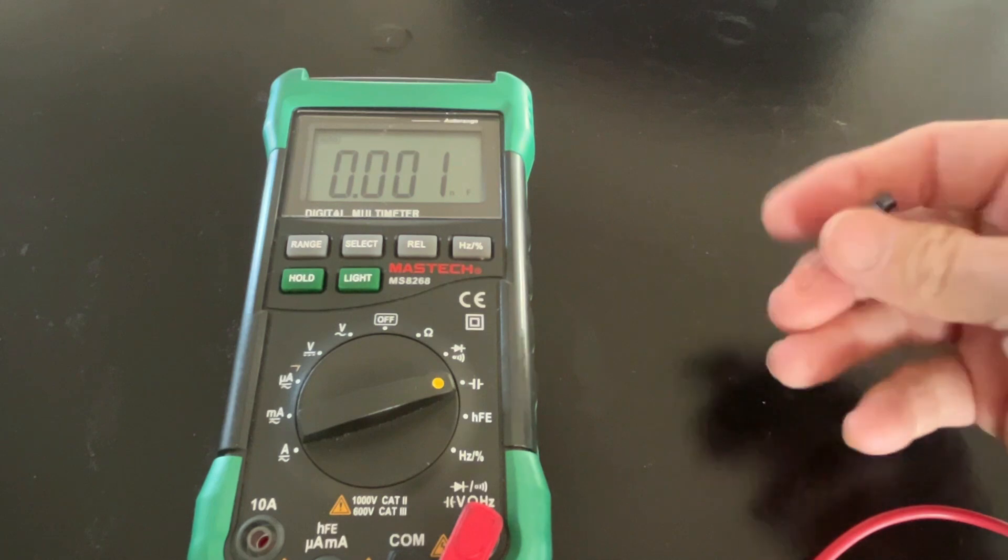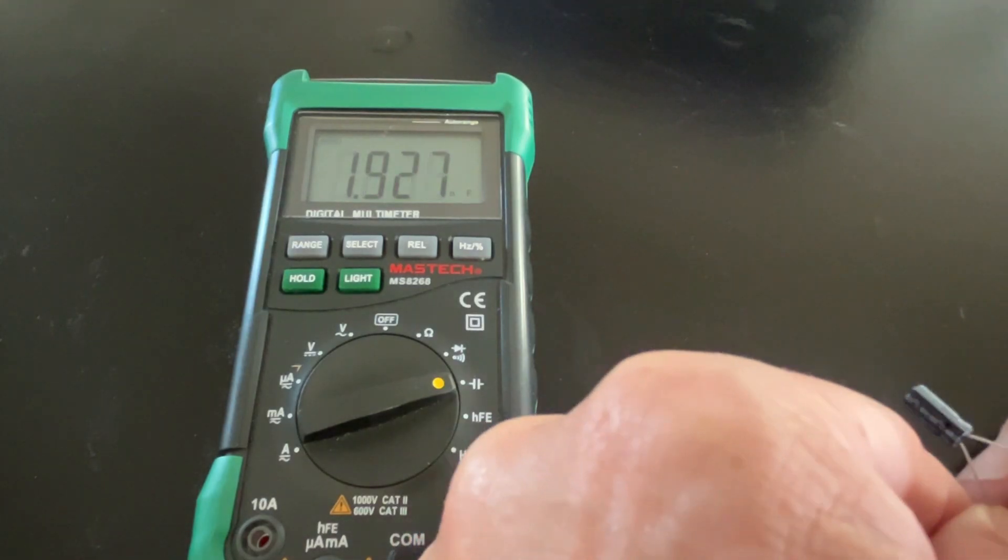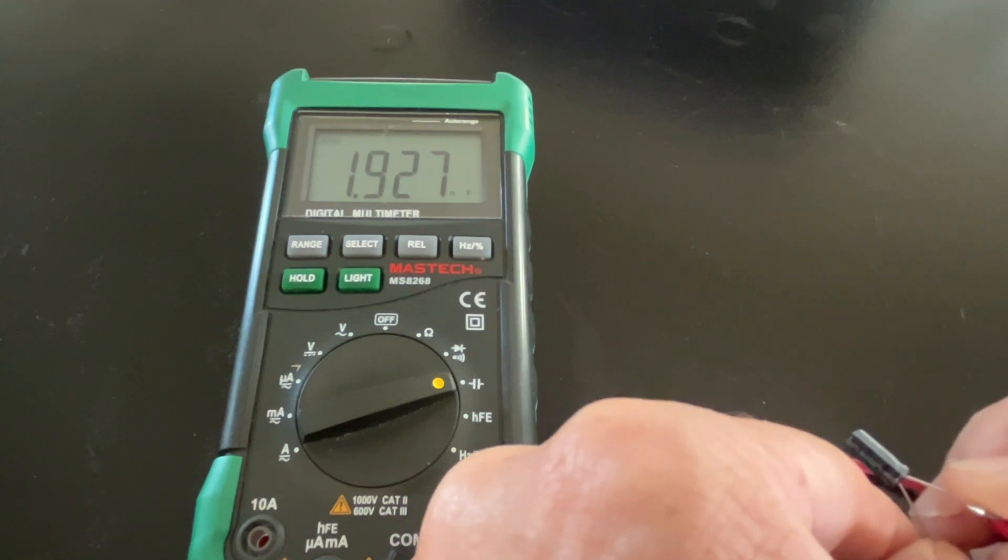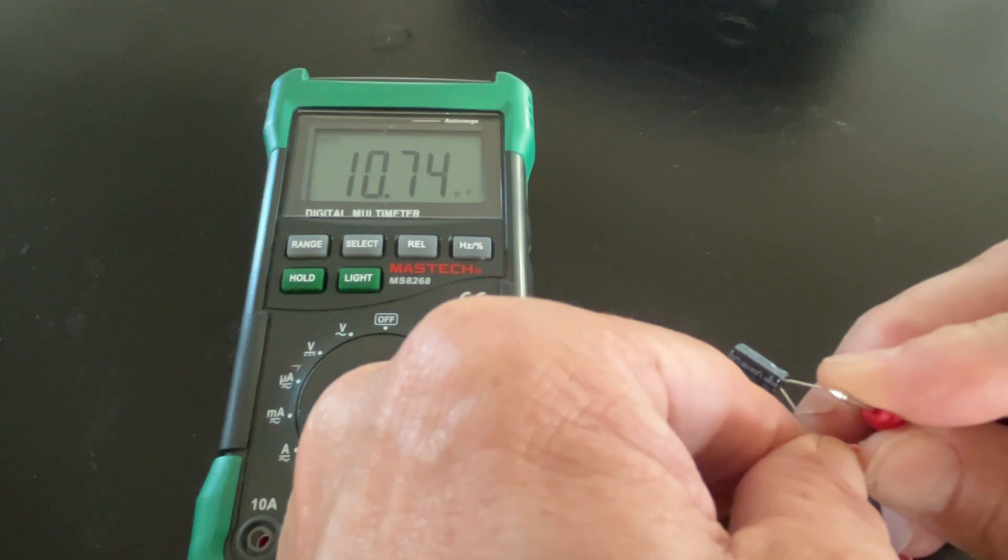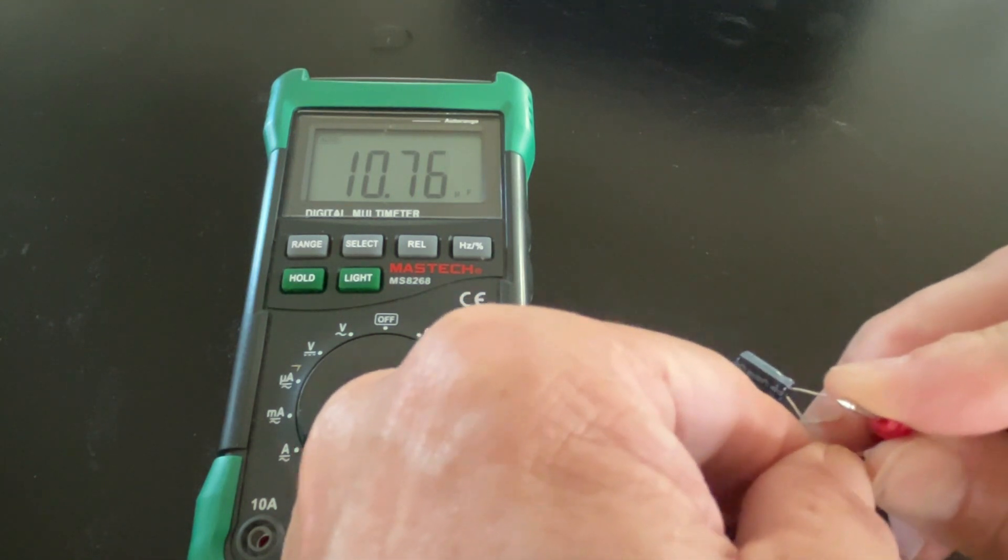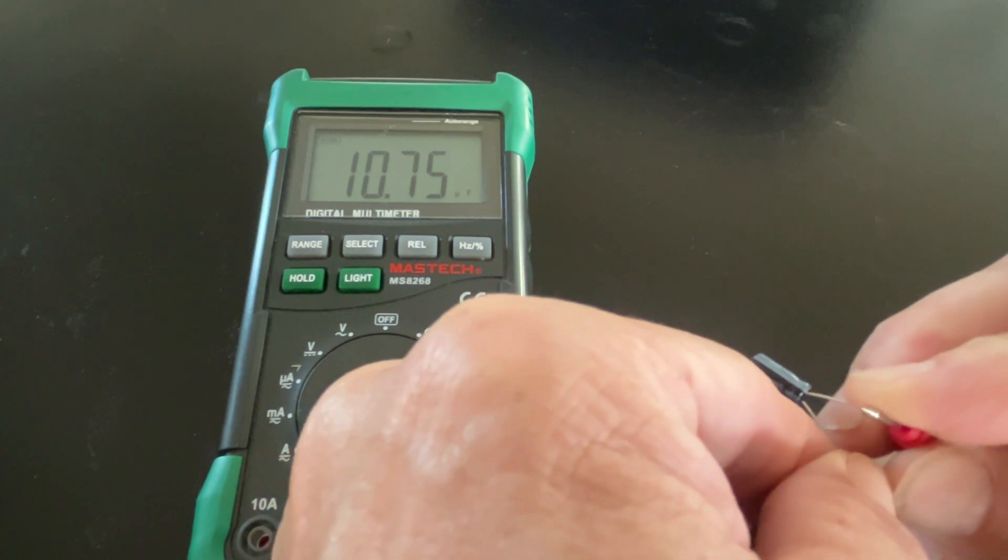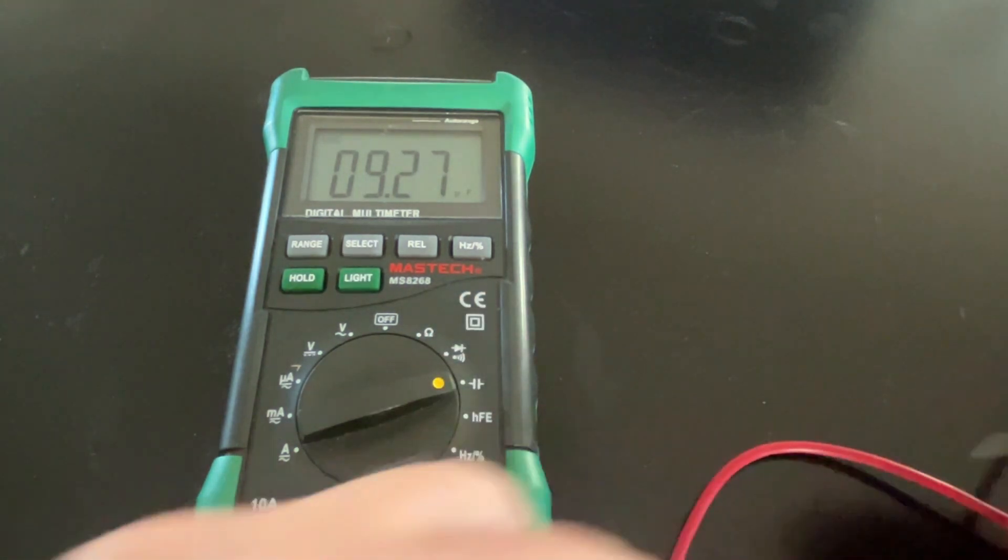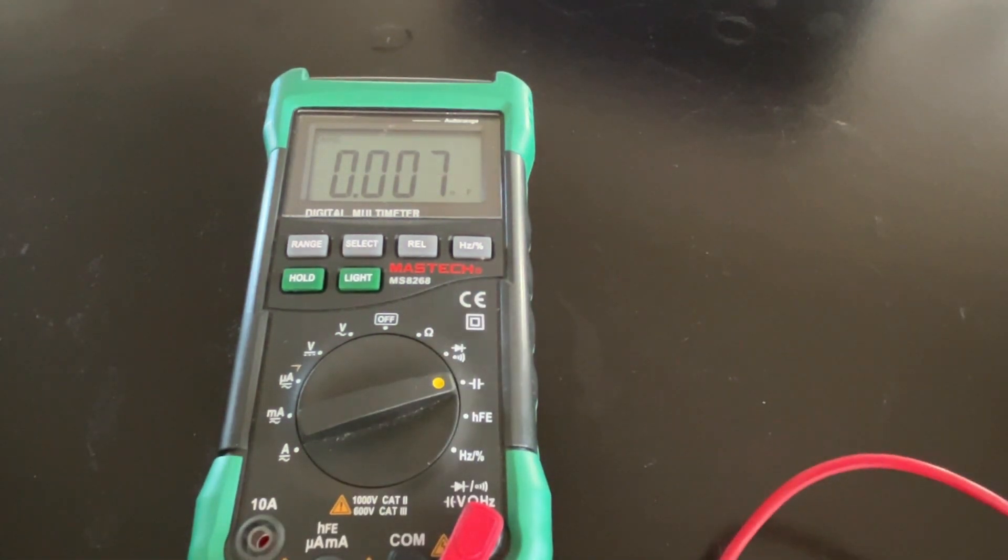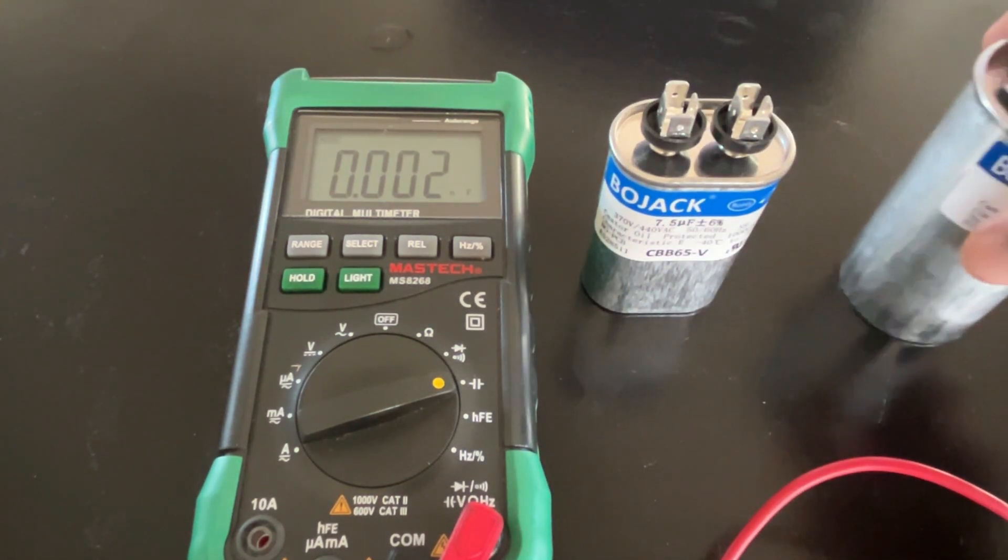Okay, now I've got this really small capacitor. 10.74—so I don't have a percentage that this one could be off, but this is off by about seven percent. I think this capacitor is just fine.